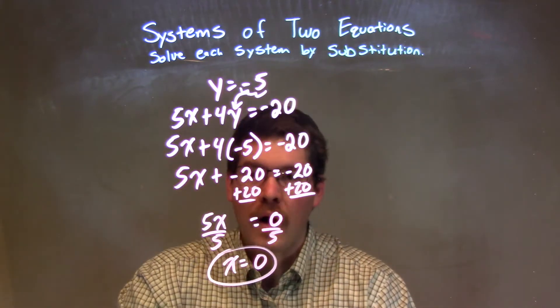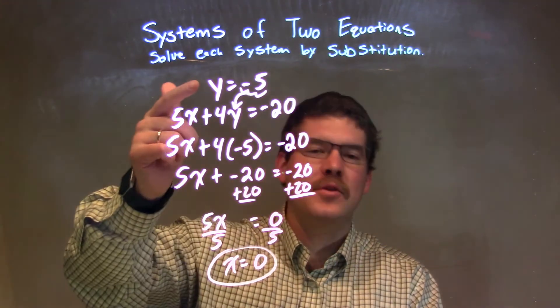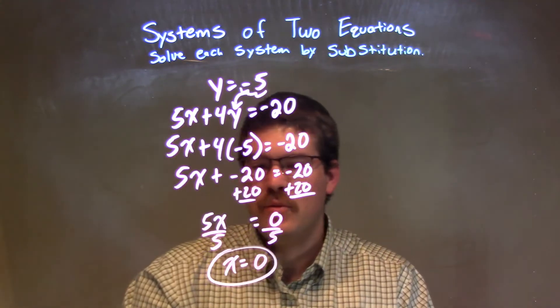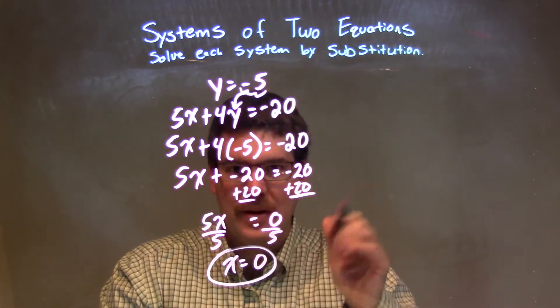Now, we need to find the y value. Well, this one's actually pretty good if you can see it. We already were given that y is equal to negative 5, and so that's what it is. But let's plug it into the second equation just to be sure.